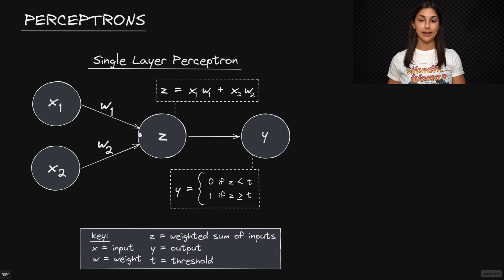The connections linking the input features to this node are the weights of the perceptron. So we have one weight per input feature — W1 and W2.